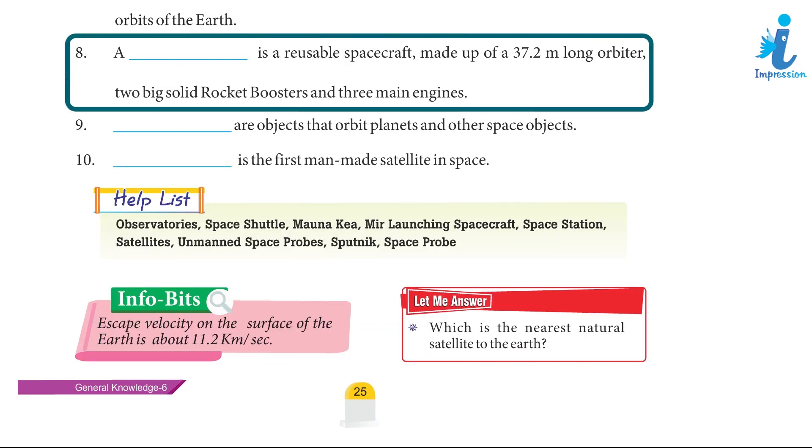8. A space shuttle is a reusable spacecraft made up of a 37.2-meter long orbiter, two big solid rocket boosters, and three main engines.